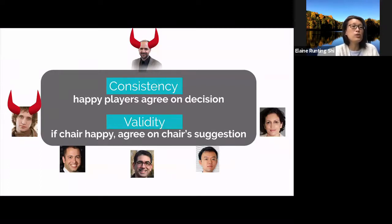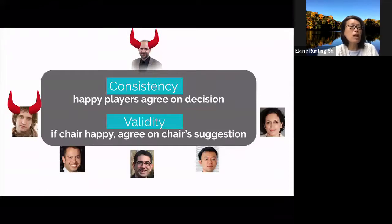Consistency requires that they all reach the same decision, and validity requires that if Aguilos is happy, then every happy person should output Aguilos's suggestion. From now on, we often call happy players honest, and the unhappy players are often called corrupt.